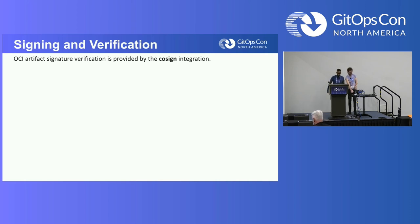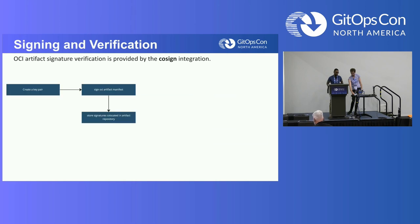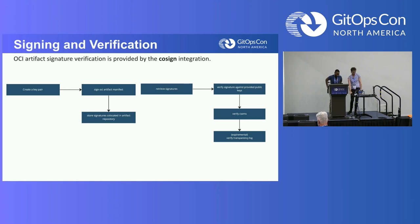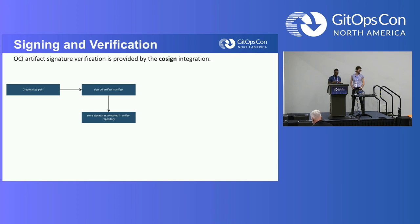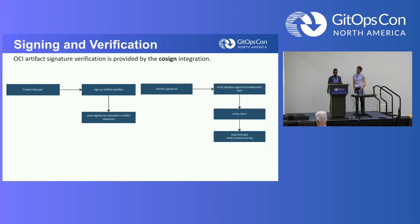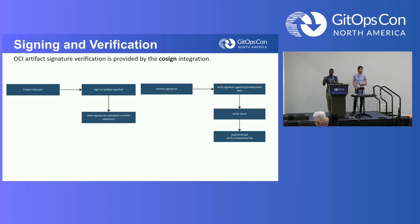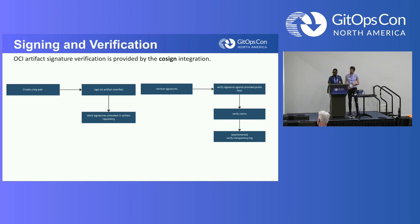We have also implemented an integration with Cosign in Flux. Cosign is used to sign OCI artifacts. The way it works: you create an elliptic curve key pair, sign your artifact manifest, and store the signature with your OCI artifacts. For verification, you retrieve the signature from the registry, verify it against a public key, and verify the claim - meaning you have a payload in the signature that knows which manifest digest has been signed and you verify that the digests correspond. There is also an experimental transparency log feature that can be used.